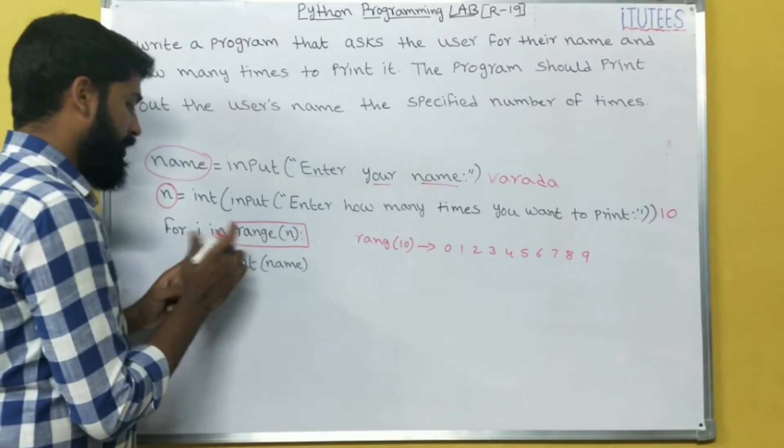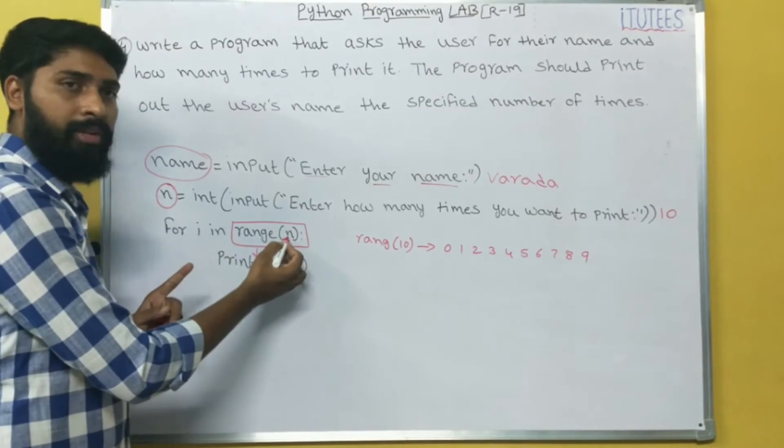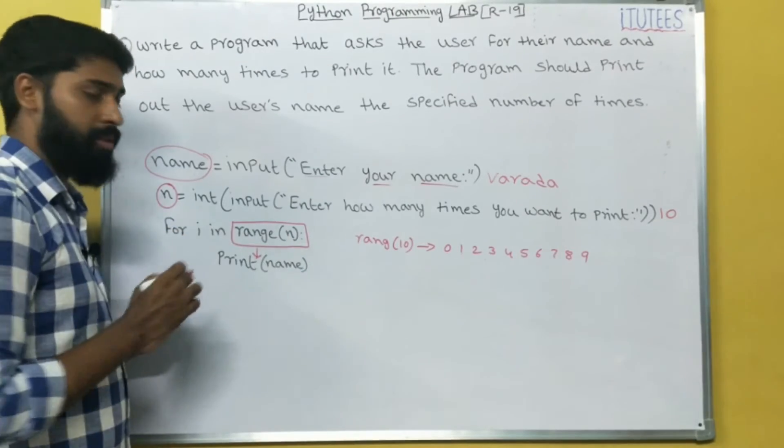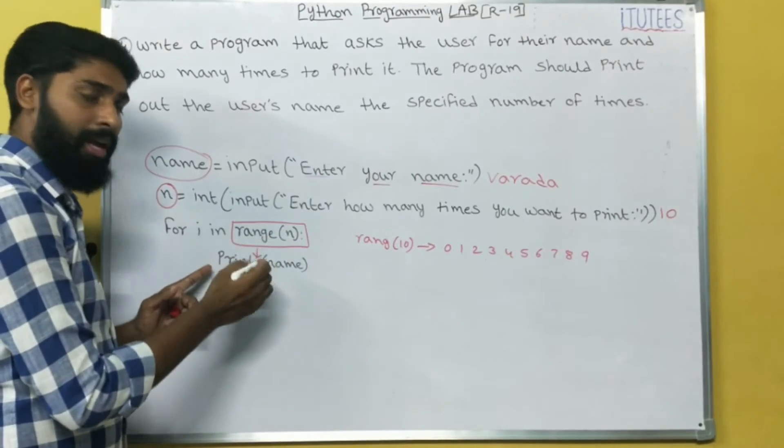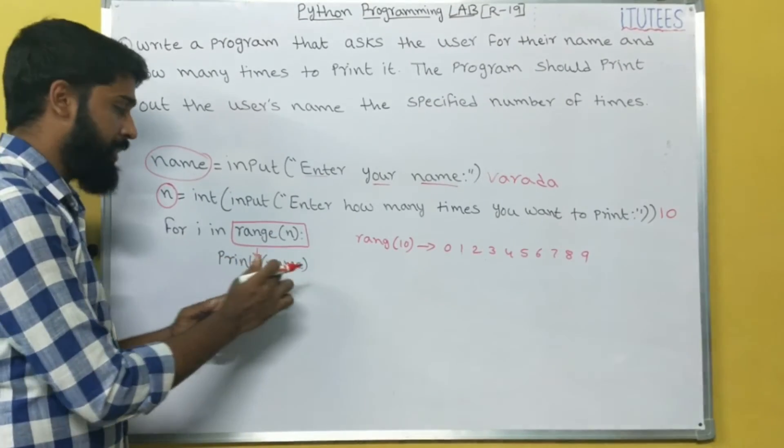How many times we enter into the loop? If I give 10, I enter 10 times. If I give n as 5, then I enter 5 times. Whenever I enter into this loop, I am going to print the name.